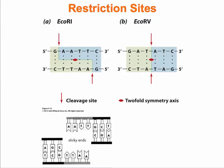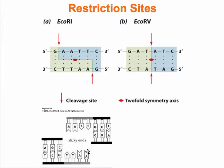Here we can see examples of different types of cuts. Here's an example of a palindrome — reading the sequence 5' to 3' on both strands, you get G, G, A, A, A, A, T, T, T, T, C, C, so the forward reading is the same in both directions. This example shows a sticky ends cut — it's asymmetrical, and when the DNA comes apart, it creates overhangs on each strand, which we call sticky ends. We can also have blunt cuts, which do not leave a sticky end. These different cut types allow us to manipulate the DNA strands in subsequent steps.